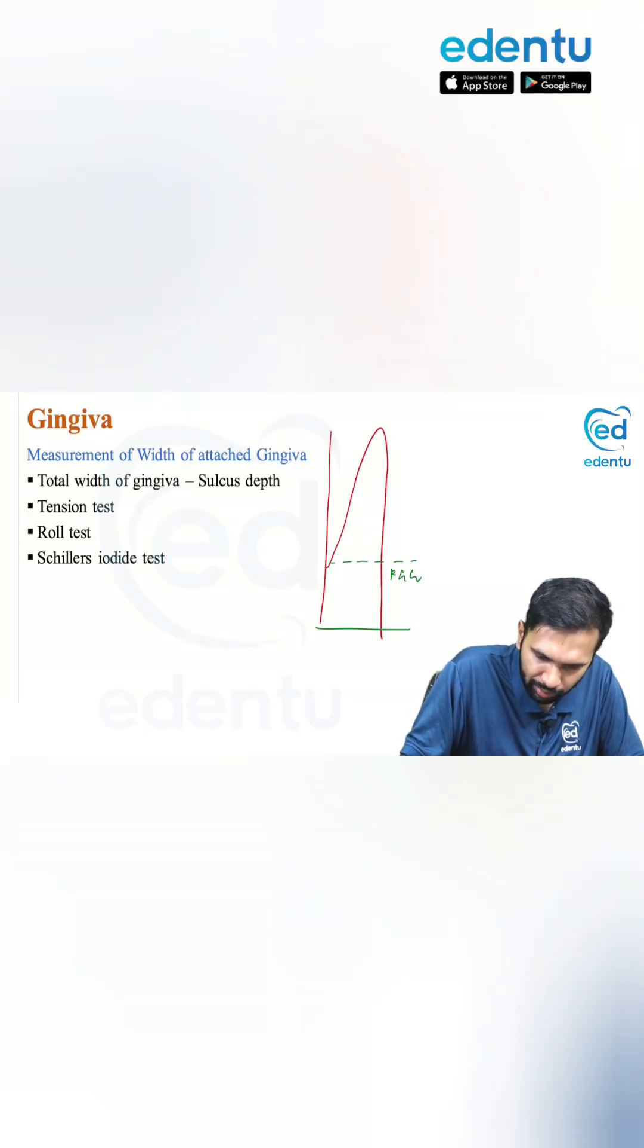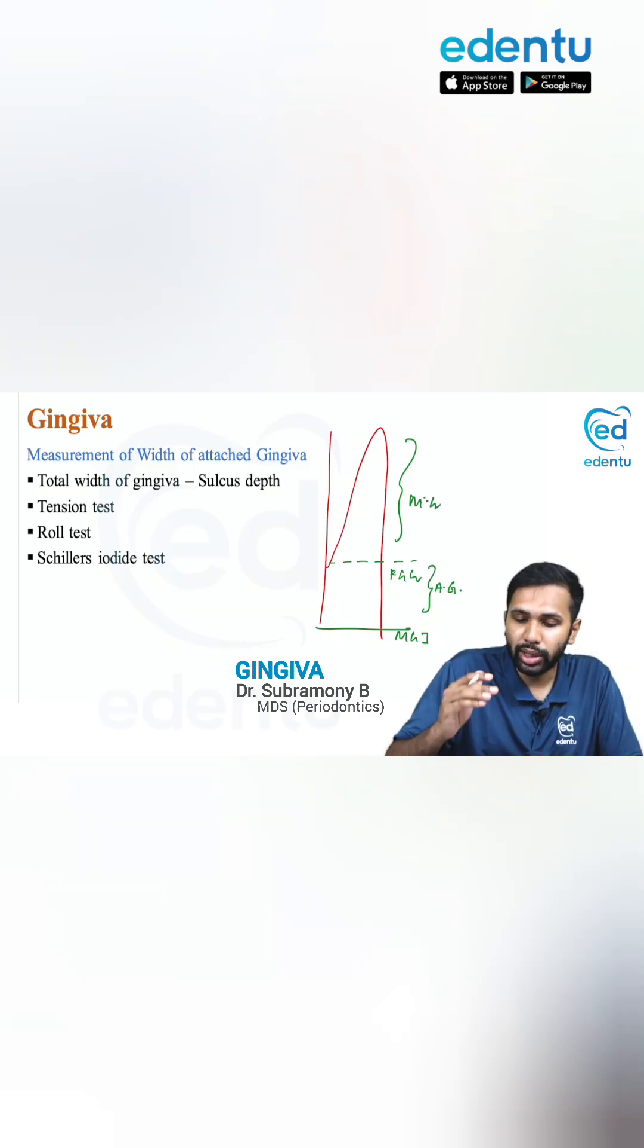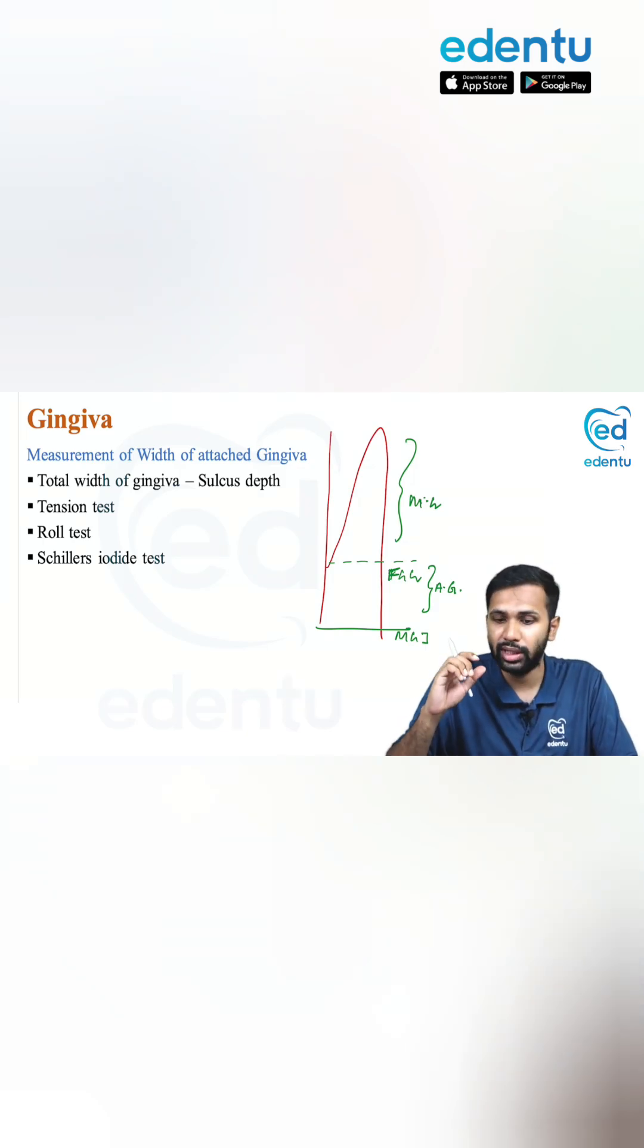From the free gingival groove to the mucogingival junction. This is the marginal and this is the attached. Measuring or locating the position of the free gingival groove is difficult because it is not present in all teeth.